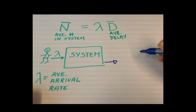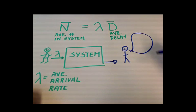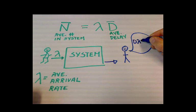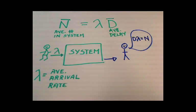It makes intuitive sense if you consider a customer that just left the system. If he spent a time of d and if the arrival rate was lambda customers per second, he will leave behind n customers.